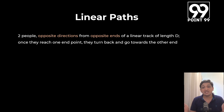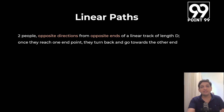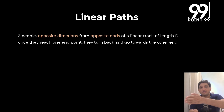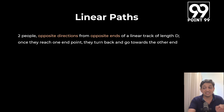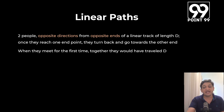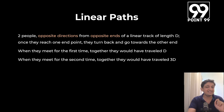On a linear track of length D, if two people travel in opposite directions from opposite ends and reach one endpoint, they turn back. Starting from points A and B in opposite directions, they will keep meeting and traveling back and forth. When they meet for the first time, cumulatively together they would have covered distance equal to D. When they meet for the second time, together they would have covered 3D. When they meet for the third time, together they have covered 5D.